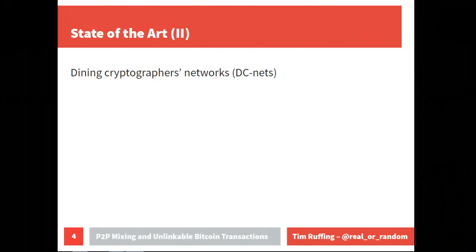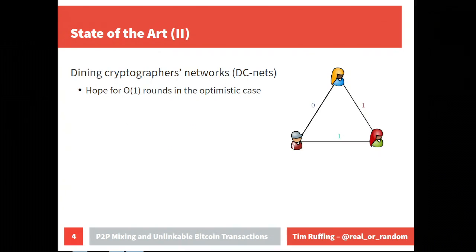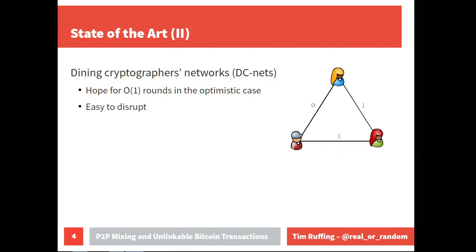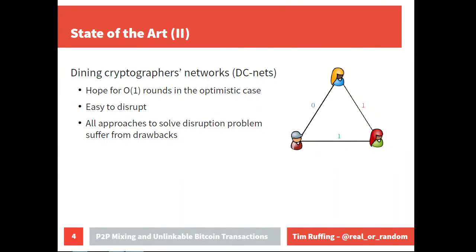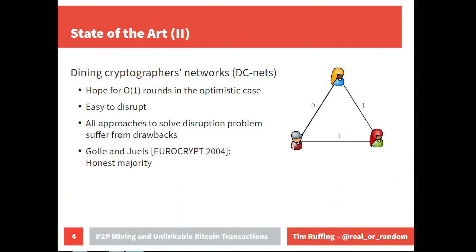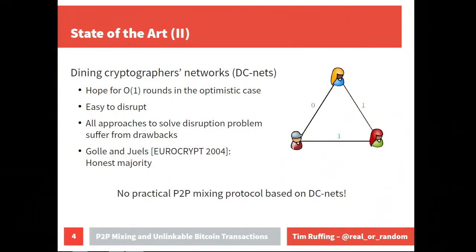What we actually want is a dining cryptographers' network (DC-net), because in a DC-net we could hope for a constant number of rounds when everybody is honest. However, DC-nets are easy to disrupt, and all approaches to solve this disruption problem suffer from many drawbacks. The protocol that comes closest to our setting is by Golle and Juels from Eurocrypt 2004, but it requires an honest majority. So currently there's no practical peer-to-peer mixing protocol based on DC-nets.